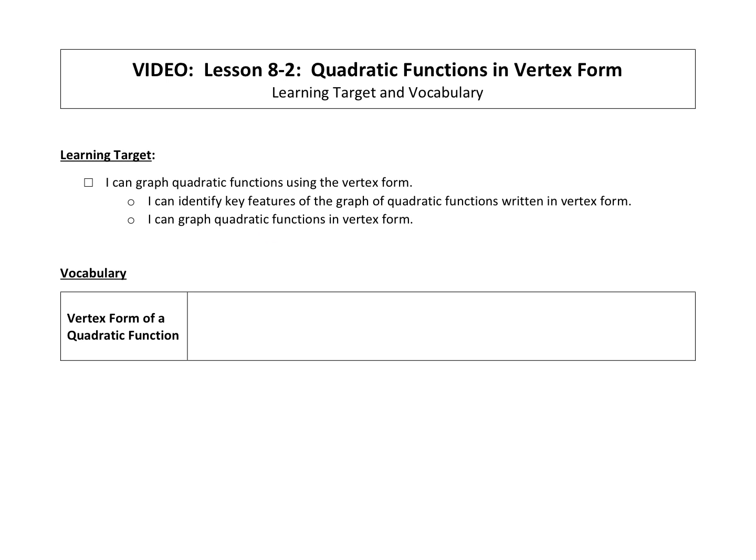Vertex form - so what is vertex form of a quadratic function? Here's what vertex form looks like: f(x) = a(x - h)² + k.